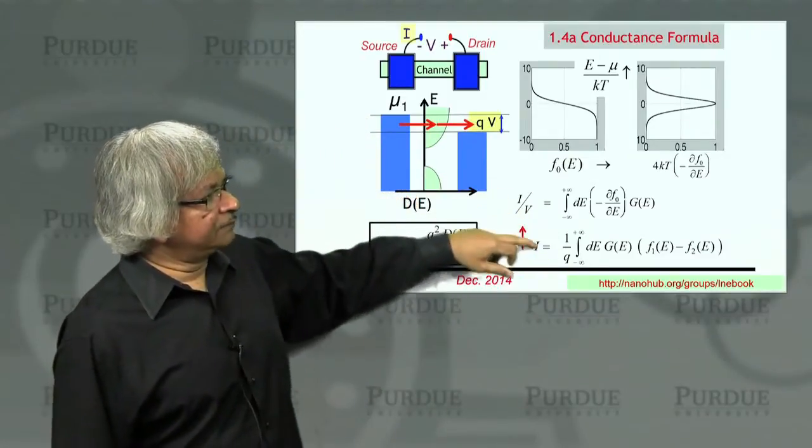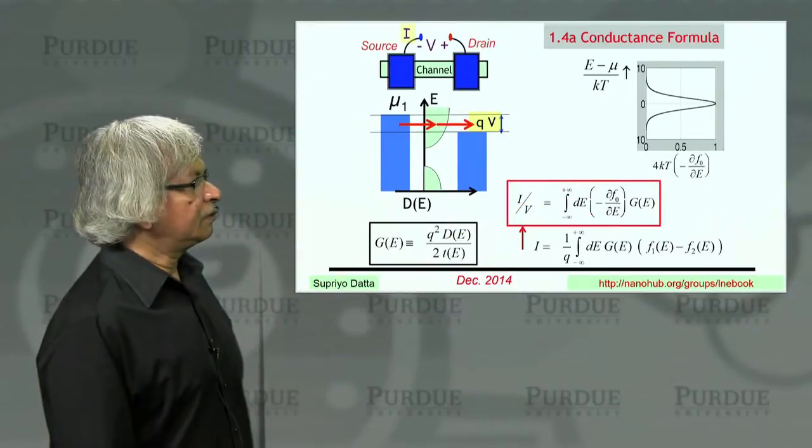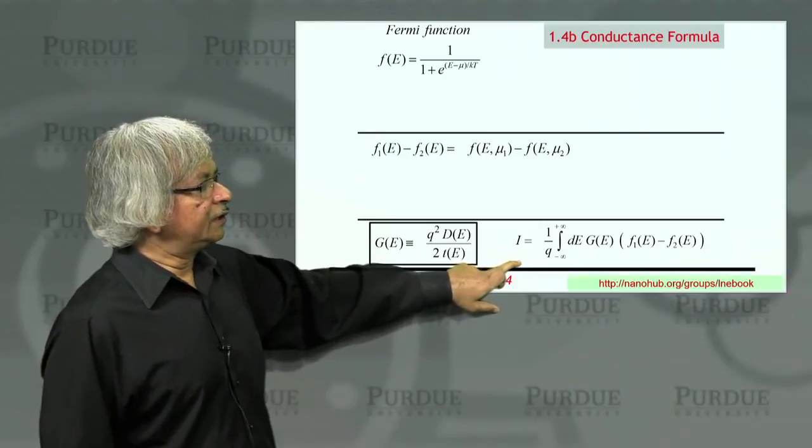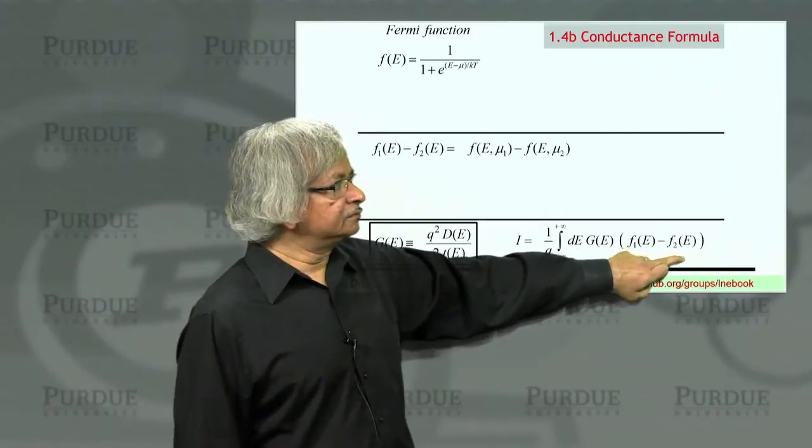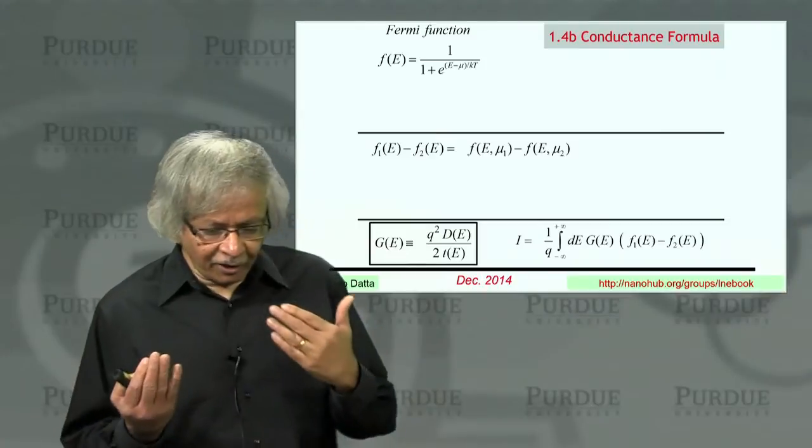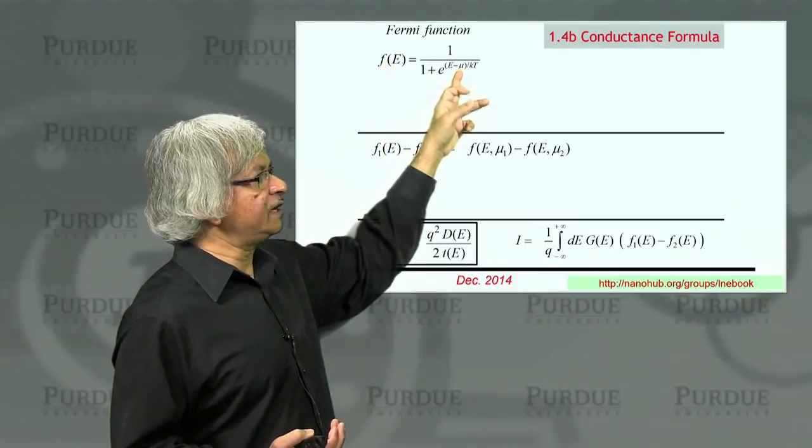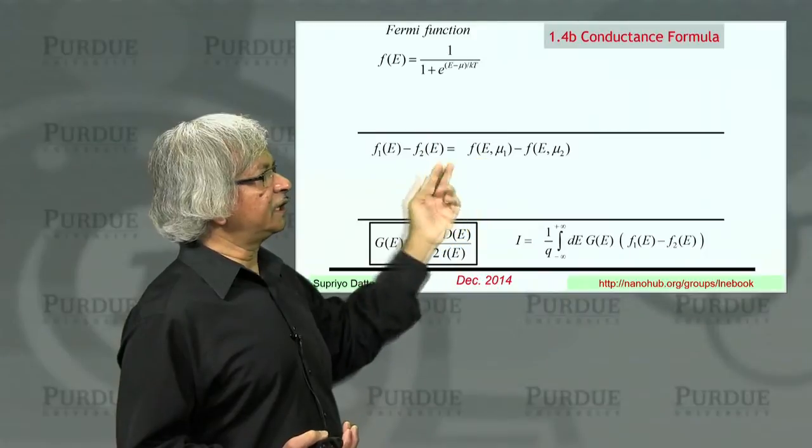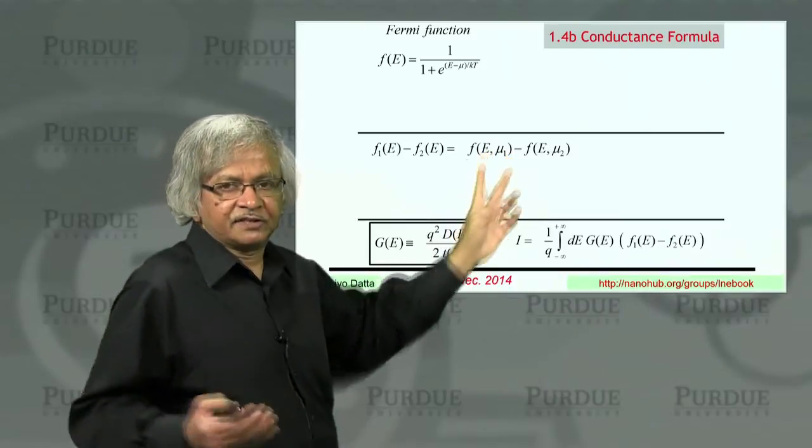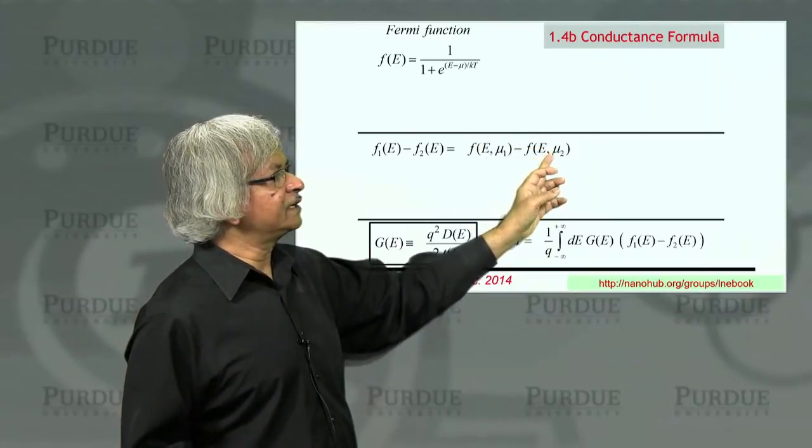So how do I get from this current expression to this conductance expression? We start from this current expression here. We have this f1 minus f2, and f is this Fermi function. So what's the difference between f1 and f2? Basically, f1 is the Fermi function in contact 1, which depends on μ1, because the Fermi function depends on μ. So we could think of f1 as the Fermi function with E and μ1, as a function of two variables, E and μ1. And f2, you could think of as E, μ2.